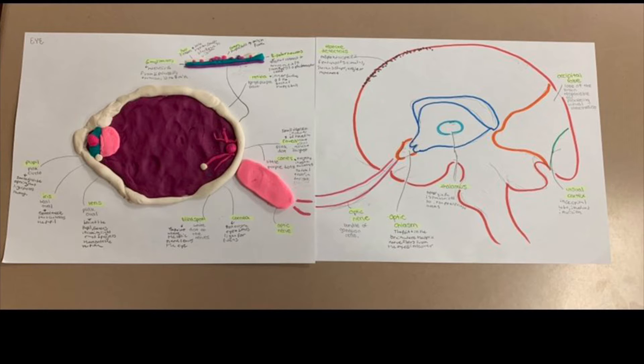In the retina, there are cones and rods. Cones are photoreceptors in the retina that detect fine details and colors in daylight. Cones are grouped in the fovea, the central focus, where accuracy is the highest.